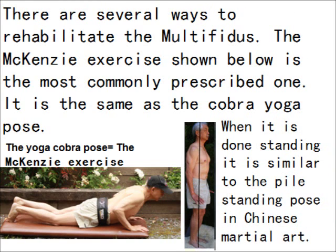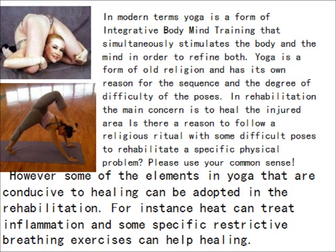Luckily, the multifidus — the small intrinsic muscles in the back — are not difficult to rehabilitate. The McKenzie exercise is the most commonly prescribed exercise, and it was discovered very accidentally by Robin McKenzie. One day he sent a lumbar disc hernia patient to a room to wait, and told the patient to lie down. When he returned, the patient was lying face down with the back arched like a bow — the cobra yoga pose. He was shocked, but when he asked the patient how they were feeling, the patient said they were much better. This tells us that one yoga pose can treat lumbar disc hernia and acute low back pain.